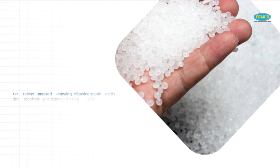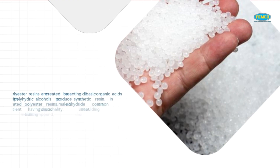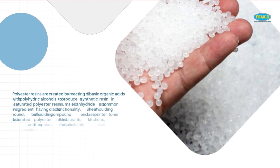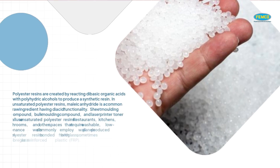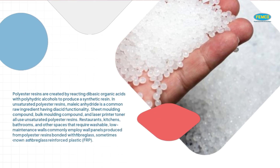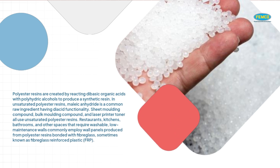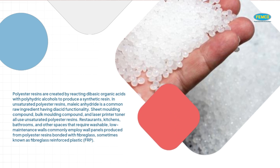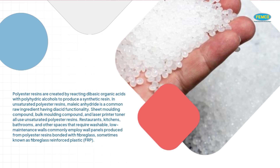Polyester resins are created by reacting dibasic organic acids with polyhydric alcohols to produce a synthetic resin. In unsaturated polyester resins, maleic anhydride is a common raw ingredient having diacid functionality.